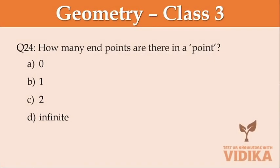How many endpoints are there in a point? Option A zero, option B one, option C two, option D infinite.